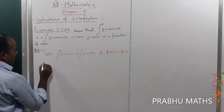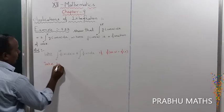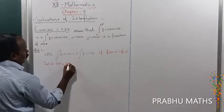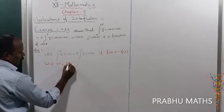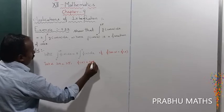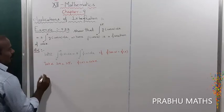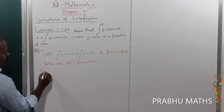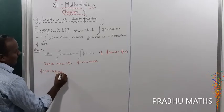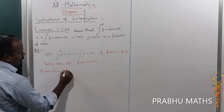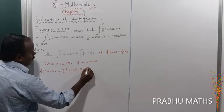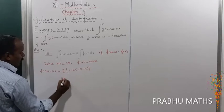Let us check that condition. Let 2a = 2π, so a = π. Next, f(x) = g(cos x). So f(2a - x) = g(cos(2π - x)).